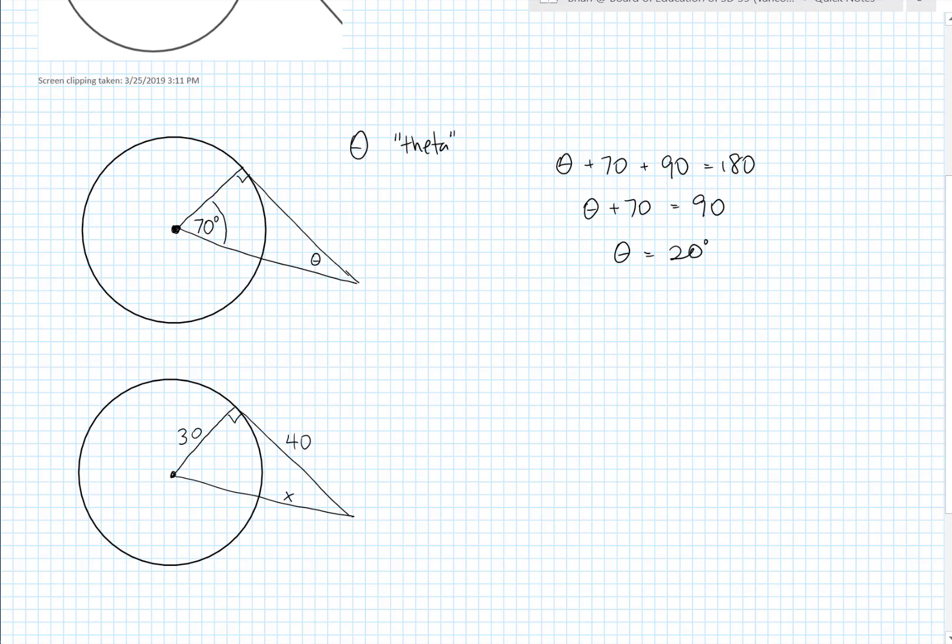So in this case the 30 and the 40 are legs of a right triangle. And we can remember Pythagoras and figure out what the hypotenuse of that right triangle is. And the hypotenuse of the right triangle goes all the way from the center of the circle to the vertex of the right triangle. So let's figure out what h is before we figure out what x is.